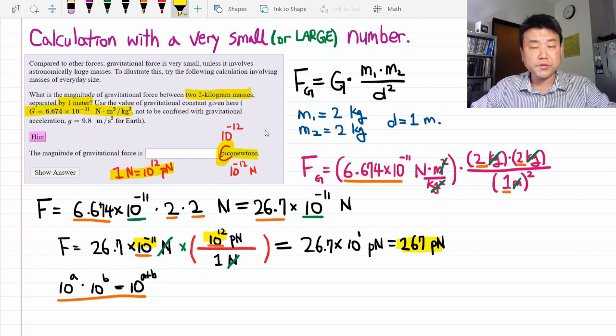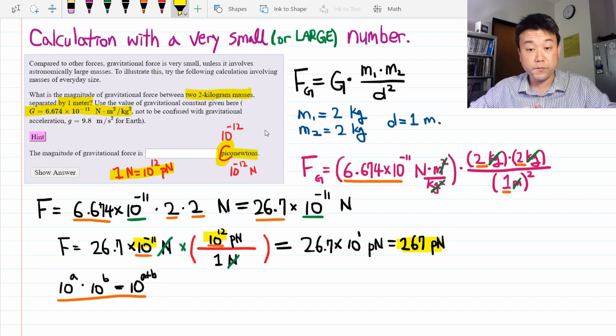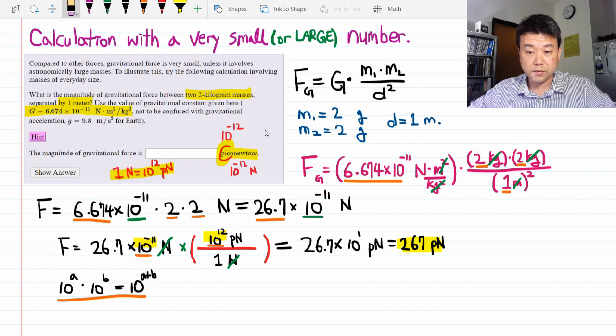But I want you to take this opportunity to further describe how you would handle it if you have more than one very small or large number. Let's say we are dealing with the gravitational forces between two gram masses, not kilogram. That's going to change some of my numbers here. Let me write this down.